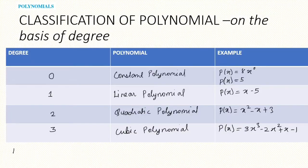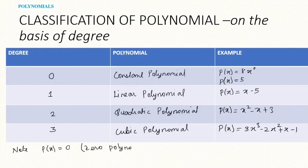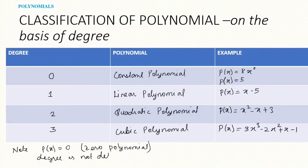One important note: p(x) = 0 is called the zero polynomial, and its degree is not defined.